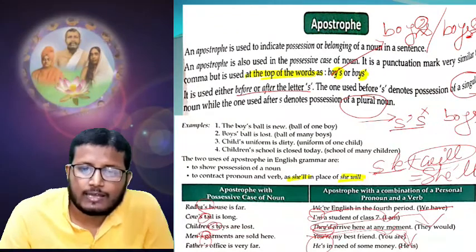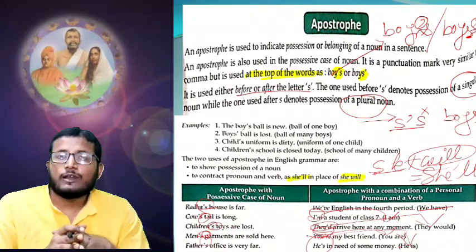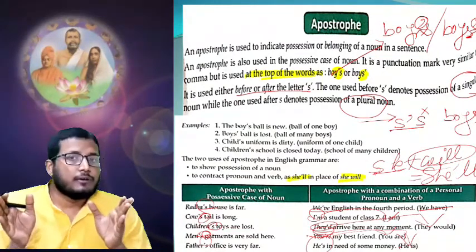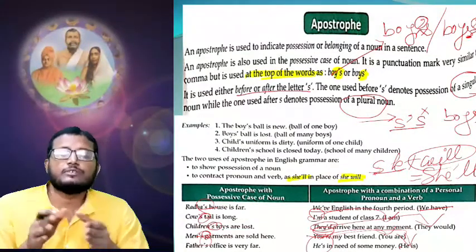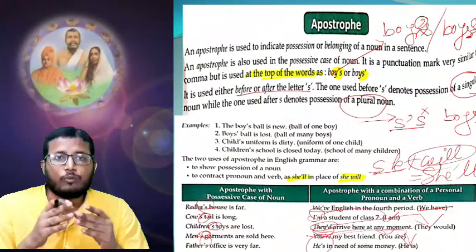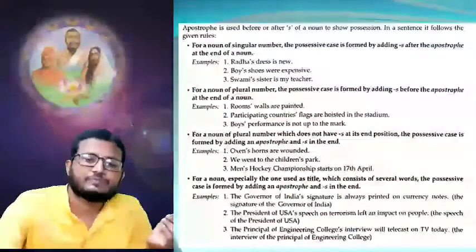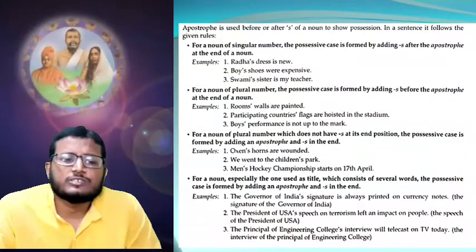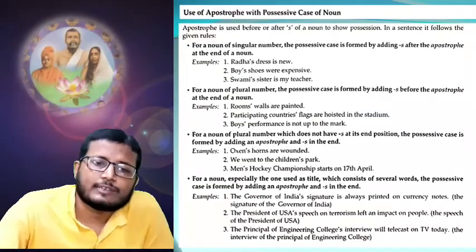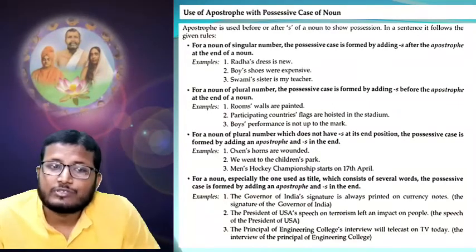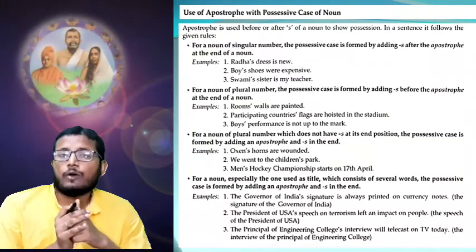These are the things we have learned so far — the use of apostrophe can be for possession, or for subject plus auxiliary verb contraction. After this, let's go to the next page. That is the apostrophe used before or after — the use of apostrophe with positive case of noun. Now we are going to another use of apostrophe with possessive case of noun.